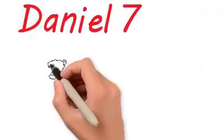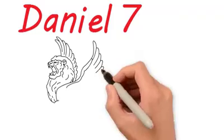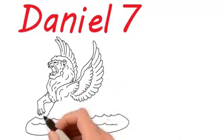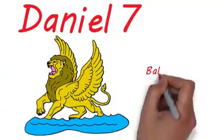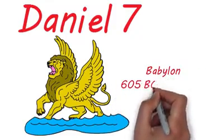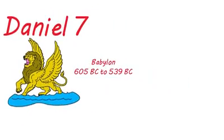Daniel 7 describes four beasts who ruled the world. The first is a lion with eagle's wings. This fierce lion represents Babylon, just as the head of gold did in Daniel 2. Babylon ruled the world from 605 BC to 539 BC.